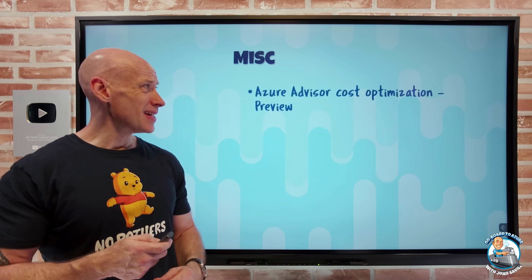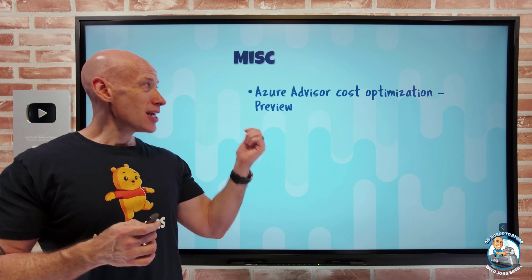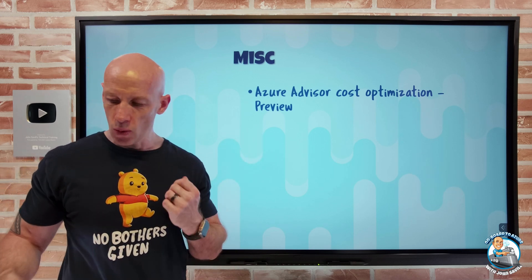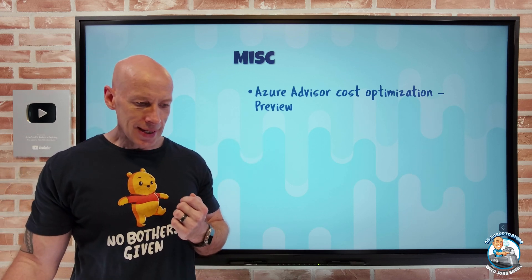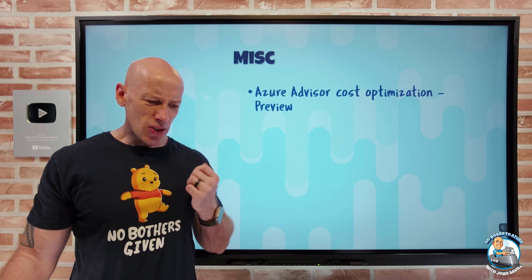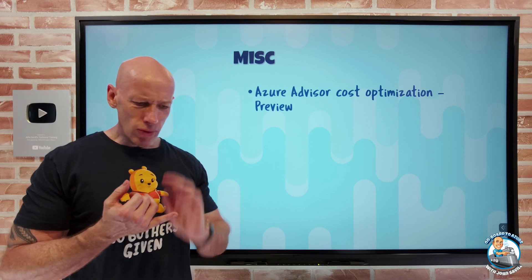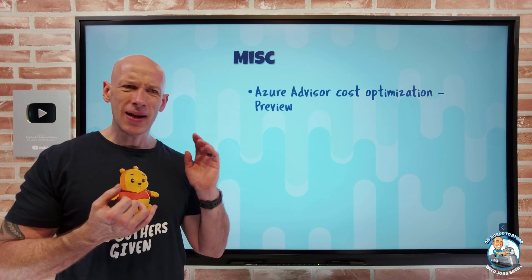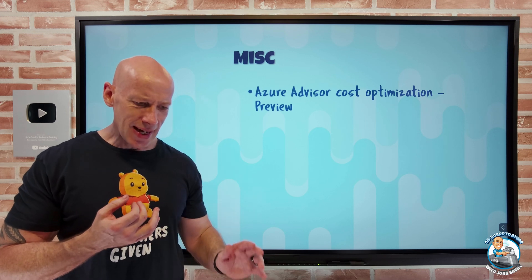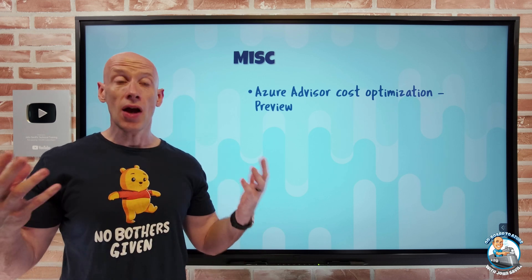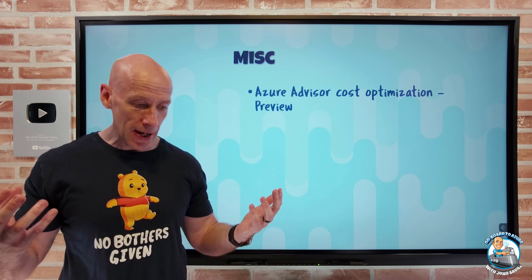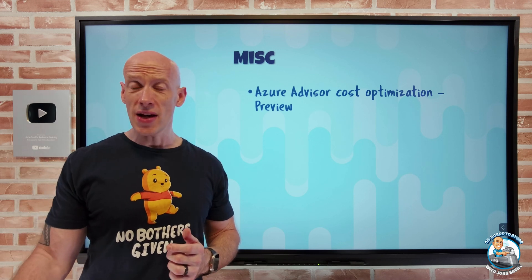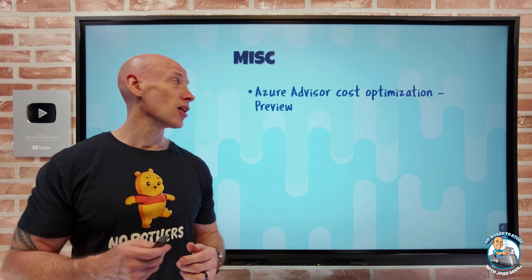And then miscellaneous. Azure Advisor now has a cost optimization workbook. This includes things like identifying idle resources, improperly deallocated virtual machines, and using things like hybrid benefit. It's in the workbooks gallery of Azure Advisor, so you can go and take a look at that.